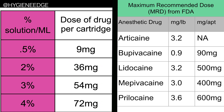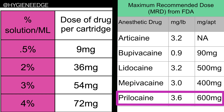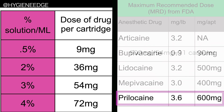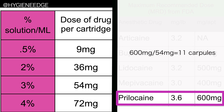So if I had a patient and I wanted to use prilocaine 3%, which has a maximum recommended dose of 600 milligrams, I'd divide 600 milligrams by 54 milligrams per carpule, and I would get 11 carpules. That's how many I can use to stay below that maximum recommended dosage.